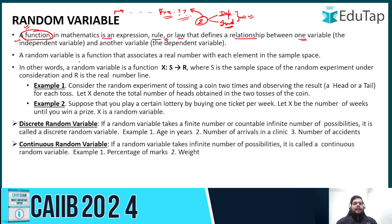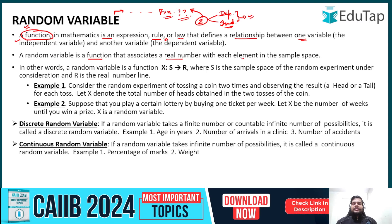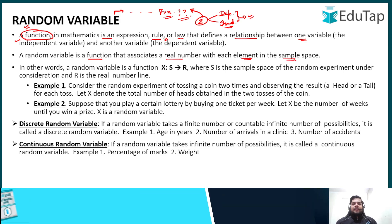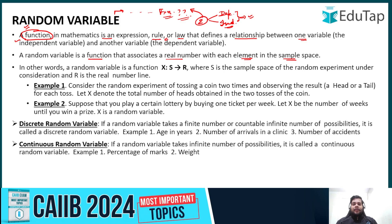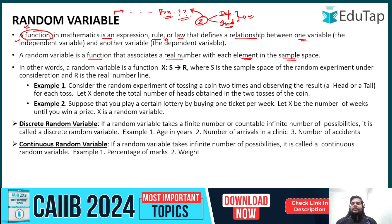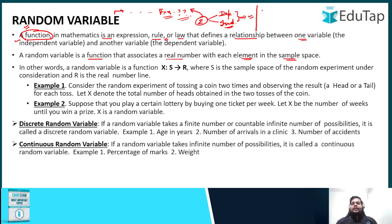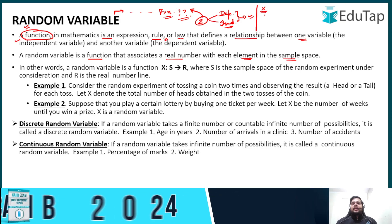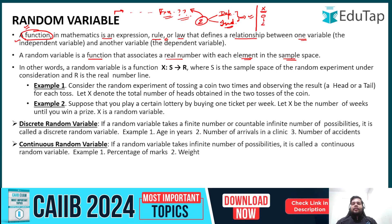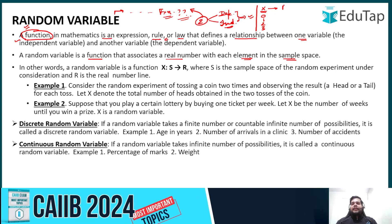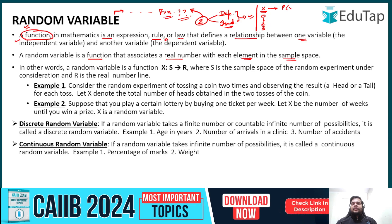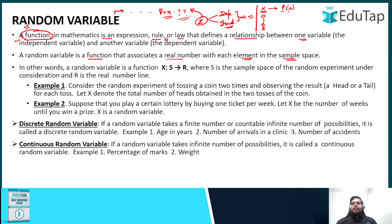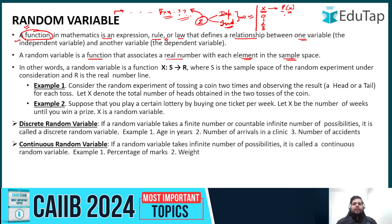A random variable is a function that associates a real number with each element in a sample space. For example, if we have a variable x with possible values 0, 1, 2, and 3, and their respective probabilities — say 0.1, 0.4, 0.1, and 0.4 — this is denoted as P(x), the probability function for x. The total of all these probabilities will be 1.